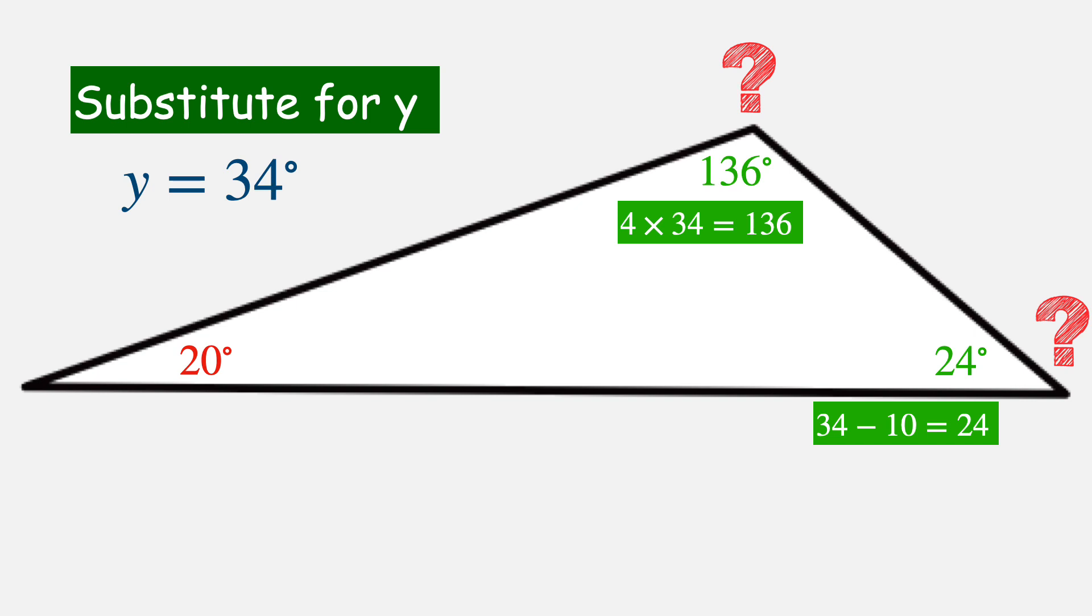The last step here is to check our angles. Remember, the triangle sum theorem tells us that the three angles of this triangle must add up to 180 degrees. So let's add them together to check. 20 plus 136 is 156. And 156 plus 24 is 180. And we have found our missing angle measures.